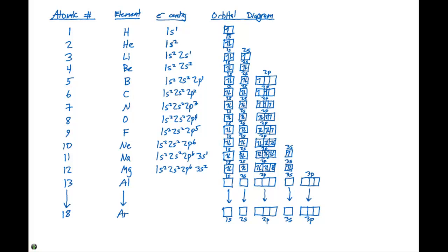In aluminum, we need to add one more electron, and the next highest orbital is going to be the 3p. So we have 1s2, 2s2, 2p6, 3s2, 3p1. We completely fill the 1s, 2s, and 2p, completely fill the 3s, and put one electron in the 3p.